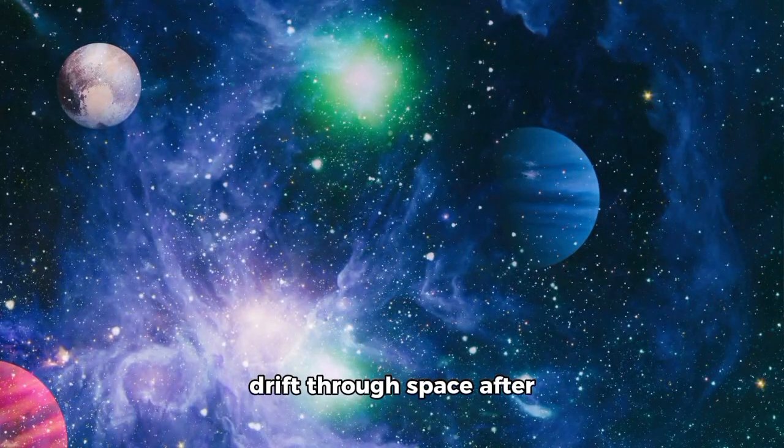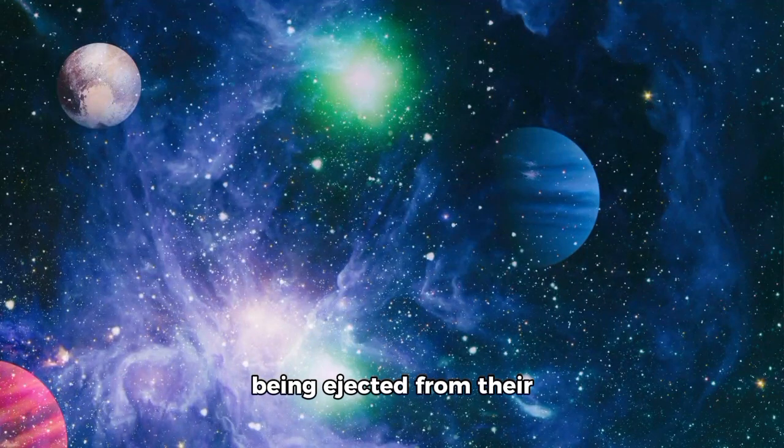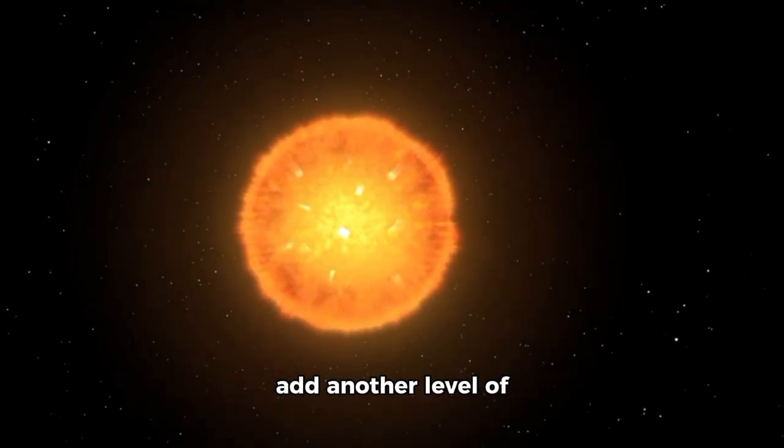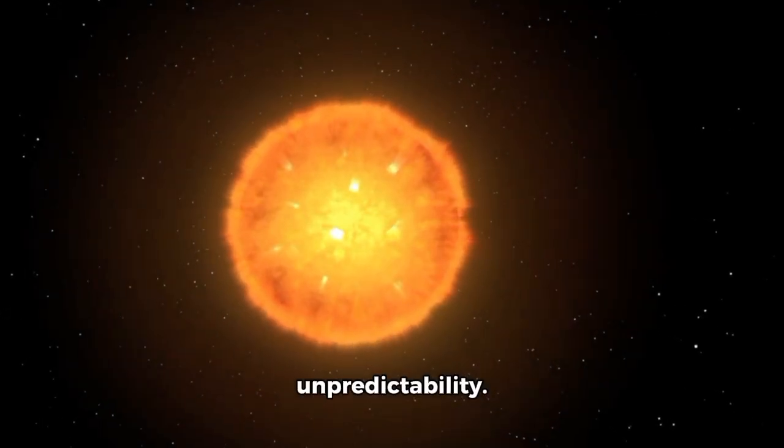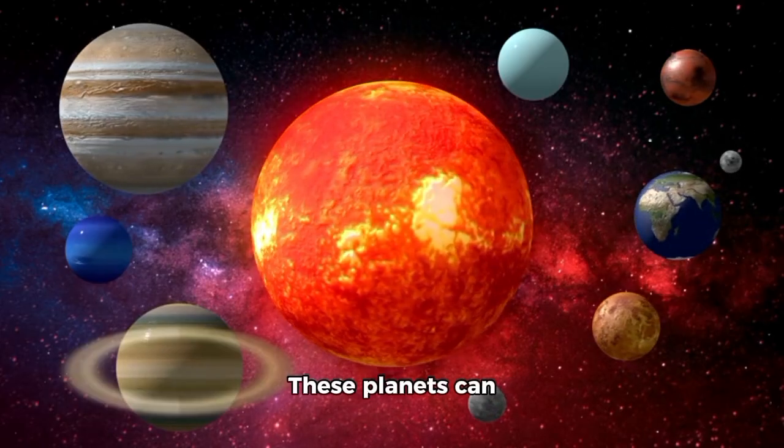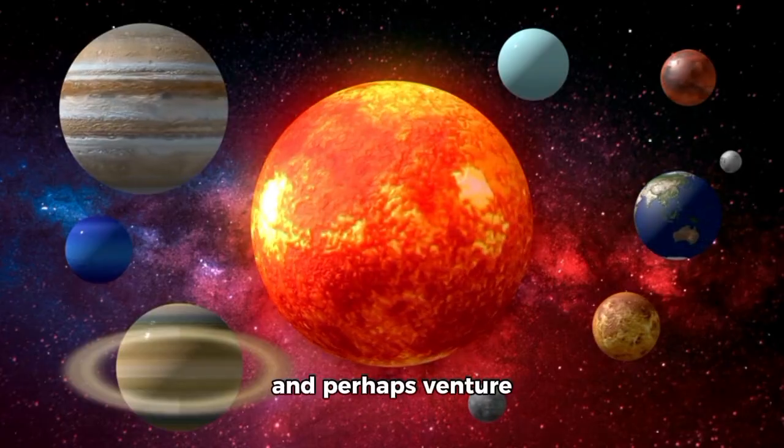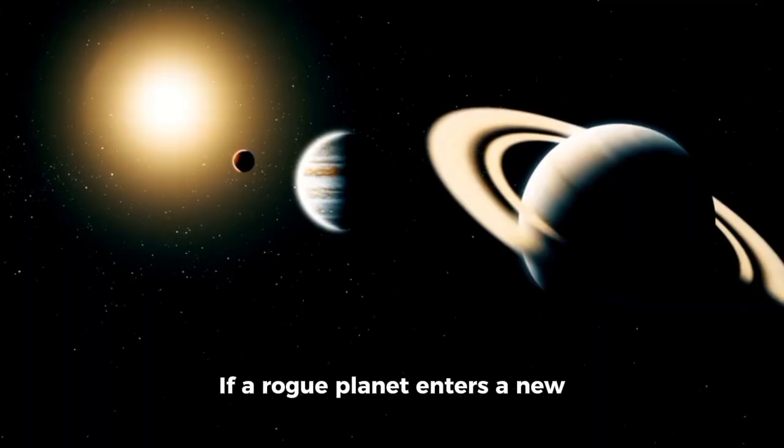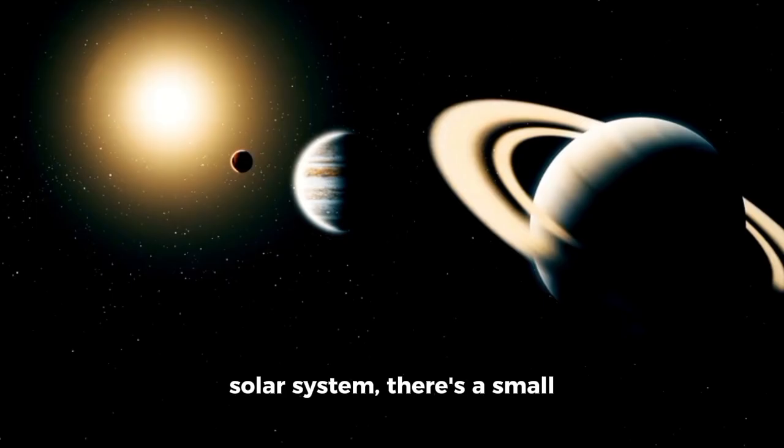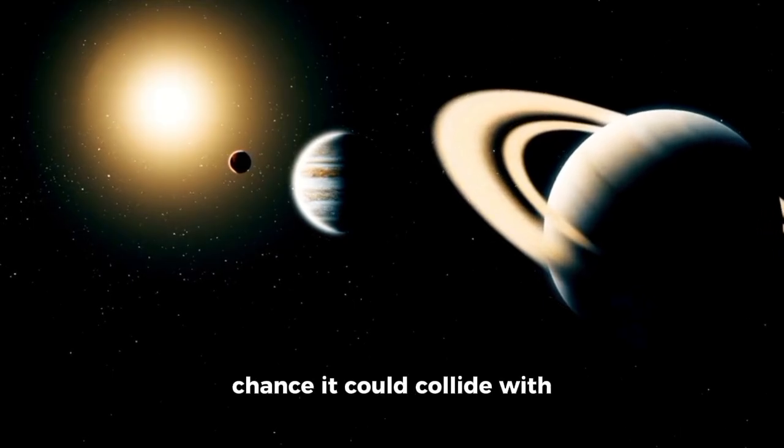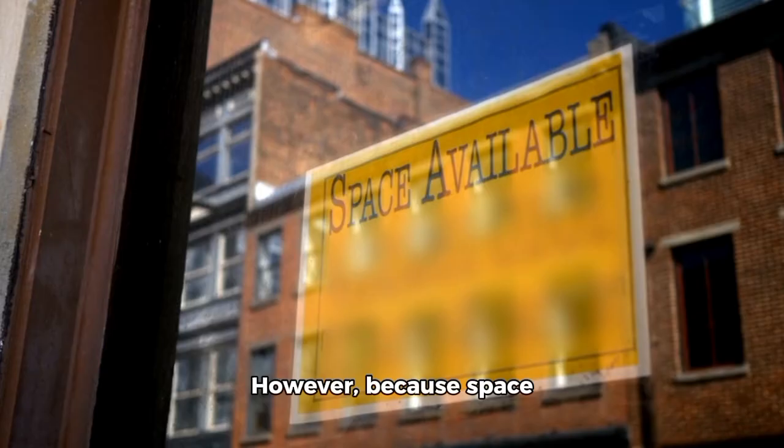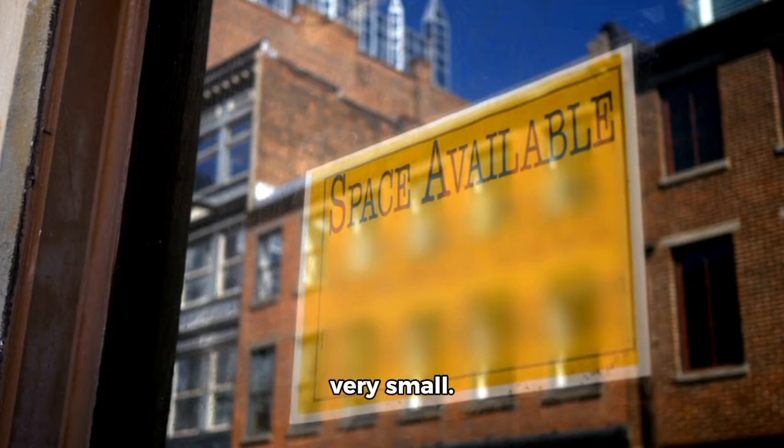Rogue planets, which drift through space after being ejected from their star systems by gravity, add another level of unpredictability. These planets can travel huge distances and perhaps venture into other star systems. If a rogue planet enters a new solar system, there's a small chance it could collide with one of the planets. However, because space is so vast, the chances of that happening are very small.